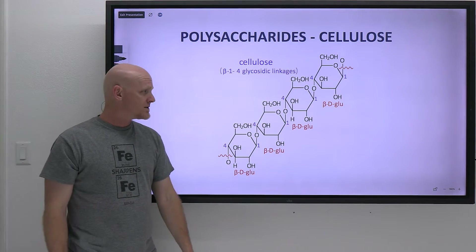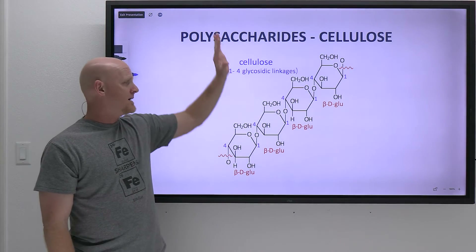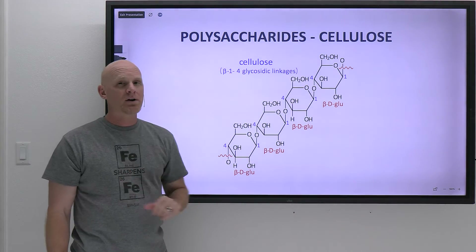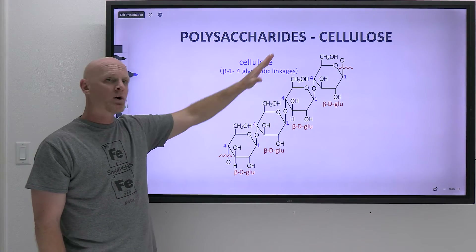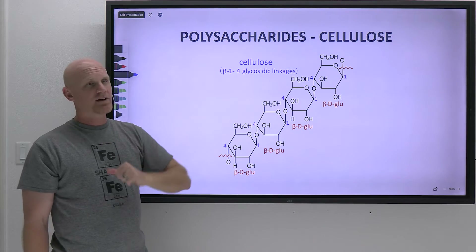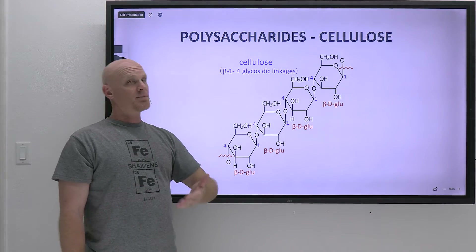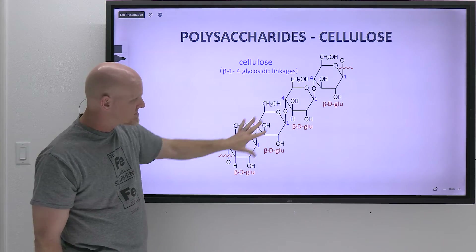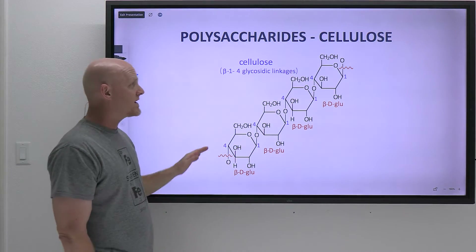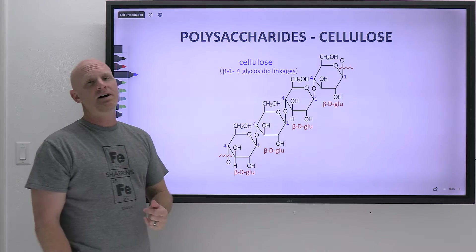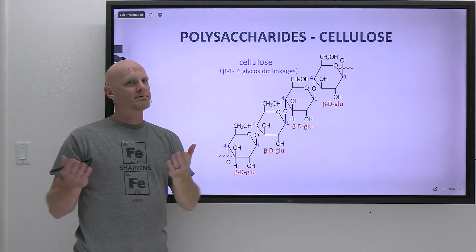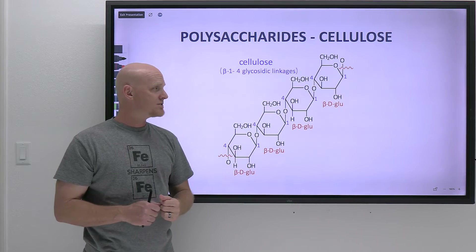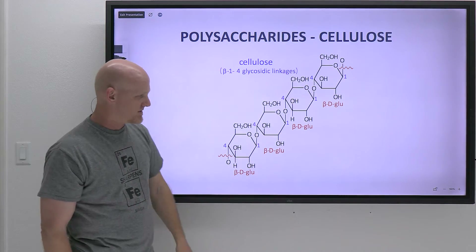Moving on to cellulose: cellulose is also a glucose polymer, and in this case it has beta-1,4 glycosidic linkages — just like the cellobiose that is derived from it. If you partially digest cellulose, that's where cellobiose comes from. Cellulose is a linear polymer found in plant cell walls, and you process it as fiber because humans don't have an enzyme capable of digesting it.